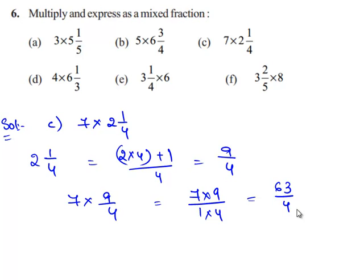63 divided by 4 is an improper fraction. So this we can convert into a mixed fraction. To convert 63 divided by 4 into a mixed fraction, we need to divide 63 with 4.